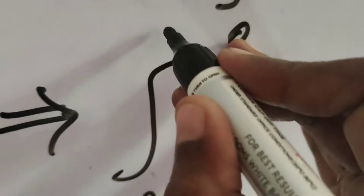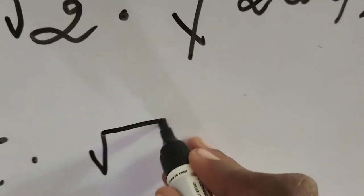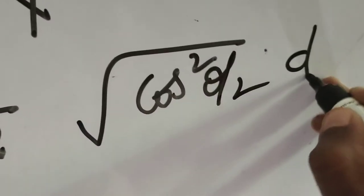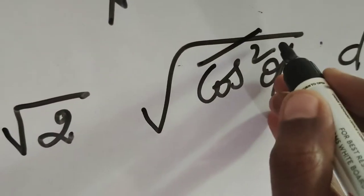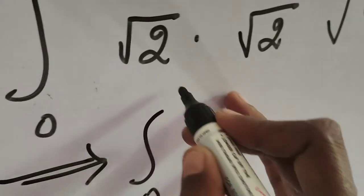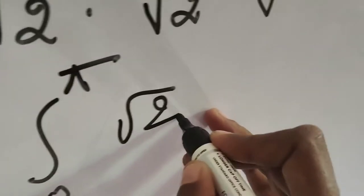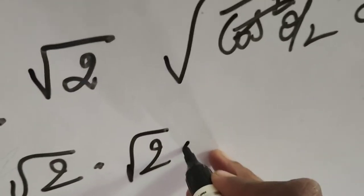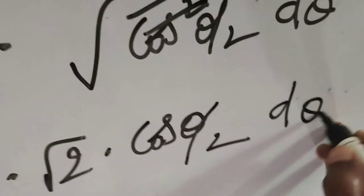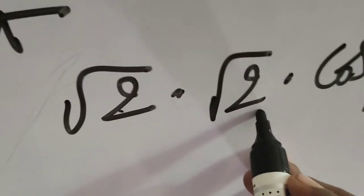That implies: integral from 0 to π of √2 into √(2cos²(θ/2)) dθ. Here the square root and square get cancelled, giving √2 into cos(θ/2). And √2 into √2 equals 2.